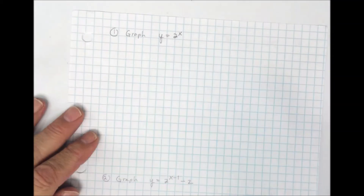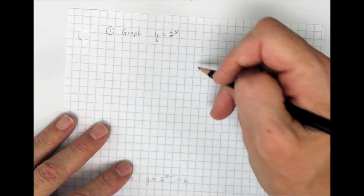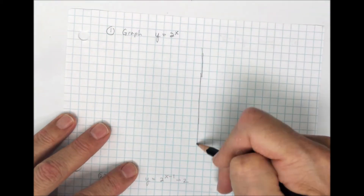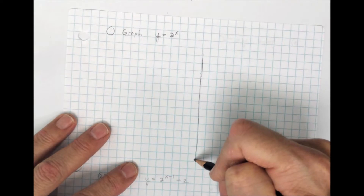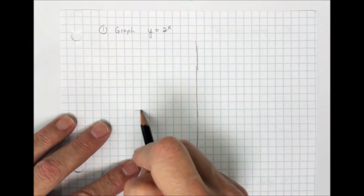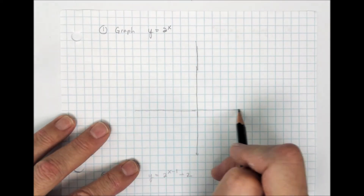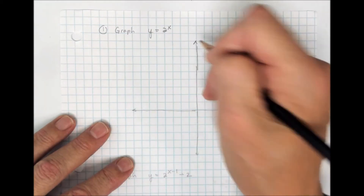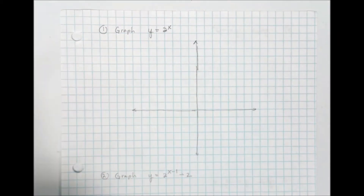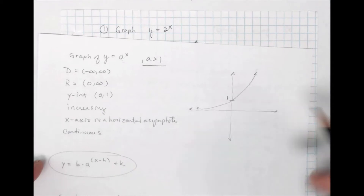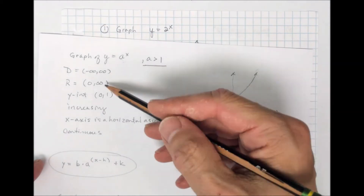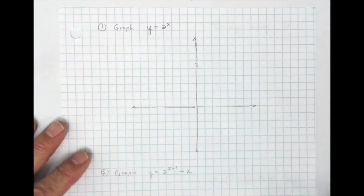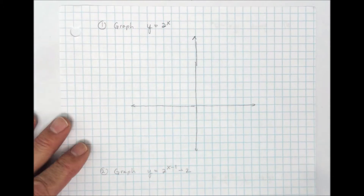The graph of y equals 2 to the x. I didn't draw my axes in, but I have graph paper, so I'm going to draw in my axes here. You know the basic shape and a little about it from the information above — domain, range, and all that.